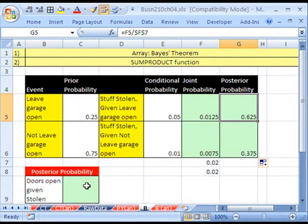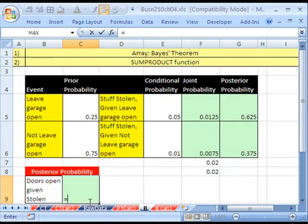OK, now let's do it all together in one cell. Then you don't have to take up all this real estate here. If your goal really is just to do doors open given that it was stolen, we do the first part in parentheses, the conditional, I mean, sorry, the joint probability, that one times this one, close parentheses. So now we have our individual joint probability.